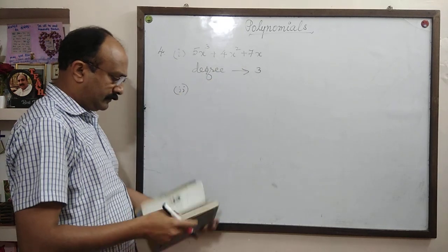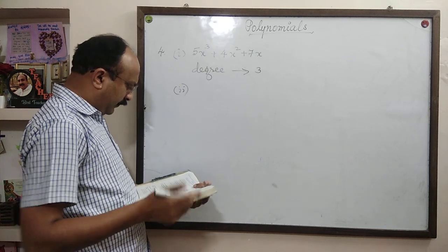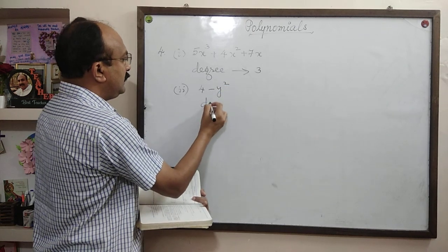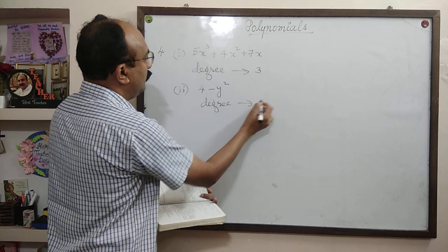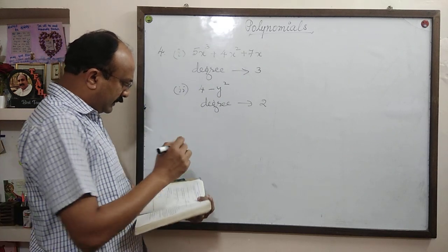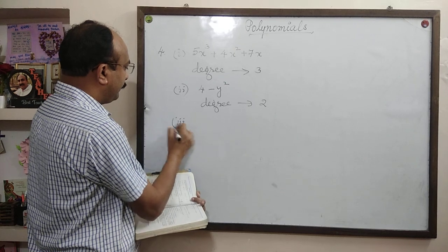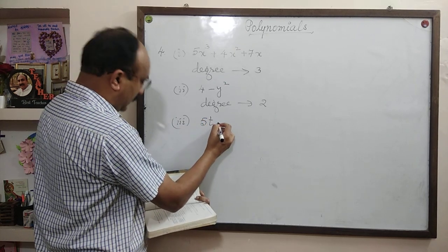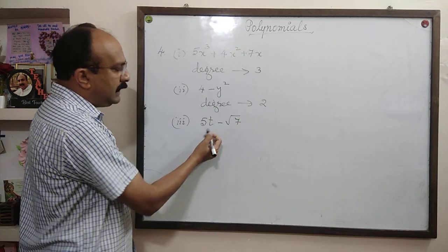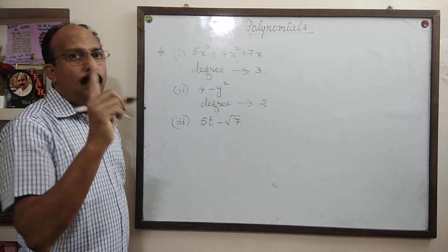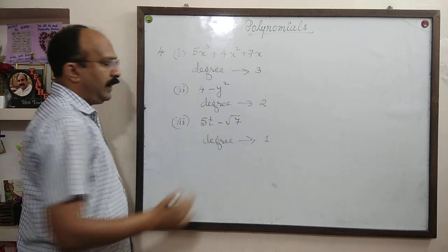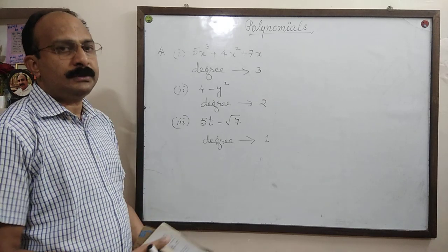Question 2: 4 minus y square. The highest power of the variable is 2, so degree of this polynomial is 2. Next one: 5t minus root 7. The variable is t — only t means t power 1. So degree of this polynomial is 1.